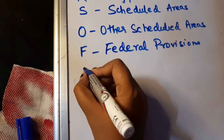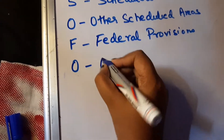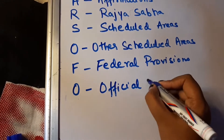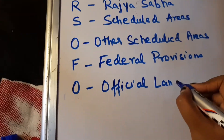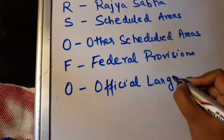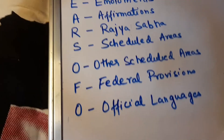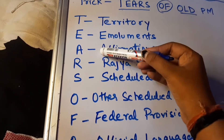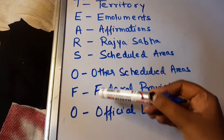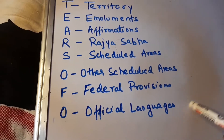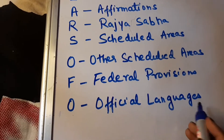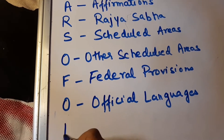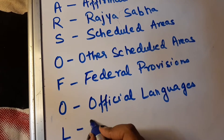Now with O in 'OLD', we see Official Languages — this is very important. We have heard a lot about the 8th Schedule. You count: 1, 2, 3, 4, 5, 6, 7, 8 — Schedule 8 deals with Official Languages.